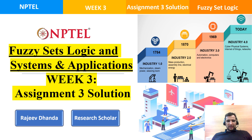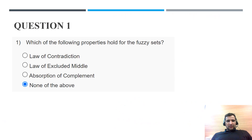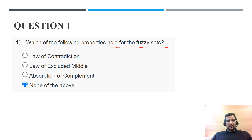Hello everyone, today I will discuss the Week 3 Assignment 3 solution for the Fuzzy Set Logic course. Question 1: which of the following properties hold for the fuzzy set — law of contradiction, law of excluded middle, absorption of complement, or none of the above?